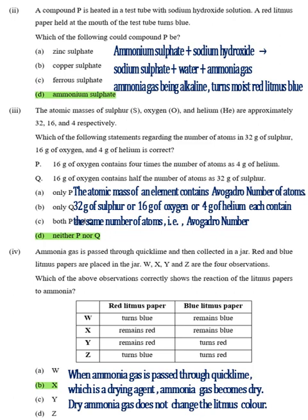Neither P nor Q. The atomic mass of an element contains Avogadro number of atoms. 32 grams of sulfur, or 16 grams of oxygen, or 4 grams of helium each contain the same number of atoms, that is Avogadro number.